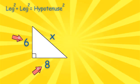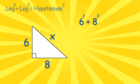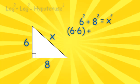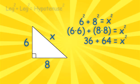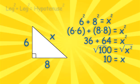I know that 6 and 8 are my legs, so I'll write 6 squared plus 8 squared. X is my hypotenuse, so I'll finish by writing equals X squared. 6 squared is 6 times 6. 8 squared is 8 times 8. I'll bring down my X squared. 6 times 6 is 36. 8 times 8 is 64. Now we are left with 100 equals X squared. We'll square root both sides of the equation. And we have X equals 10.